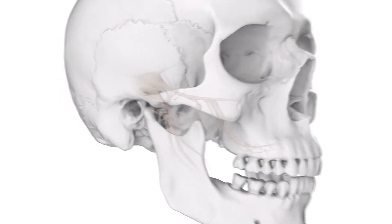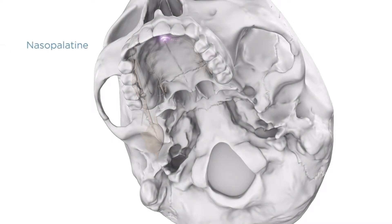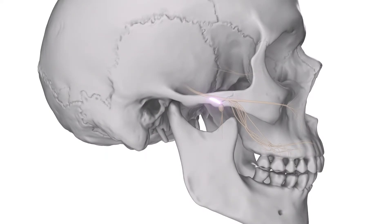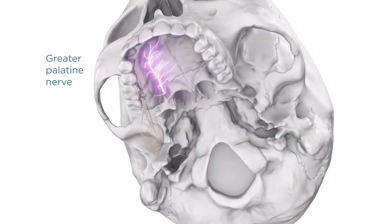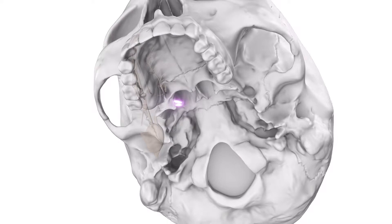The nasopalatine nerve passes downward and forward on the nasal septum, enters the incisive canal, and reaches the oral cavity via the incisive foramen to provide sensation to the palatal mucosa of the premaxilla. Palatine branches pass down the pterygopalatine canal and exit via foramina on the posterior lateral aspect of the hard palate. The greater palatine nerve emerges through the greater palatine foramen to supply sensation to the hard palate and palatal gingiva. Lesser palatine branches innervate the soft palate, uvula, and tonsillar area.